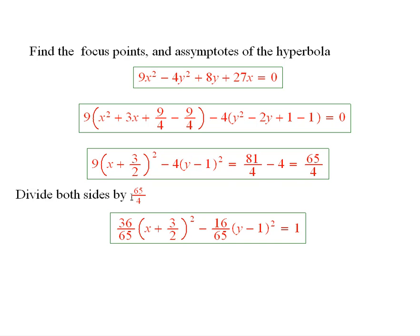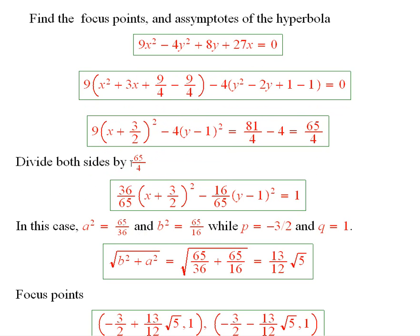So now what we're going to do is divide both sides by 65 fourths. So I do that and this is what we get. And now a squared is 65 over 36, and b squared is 65 over 16.